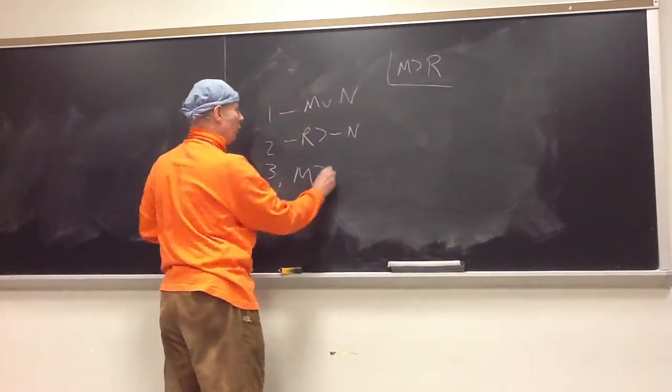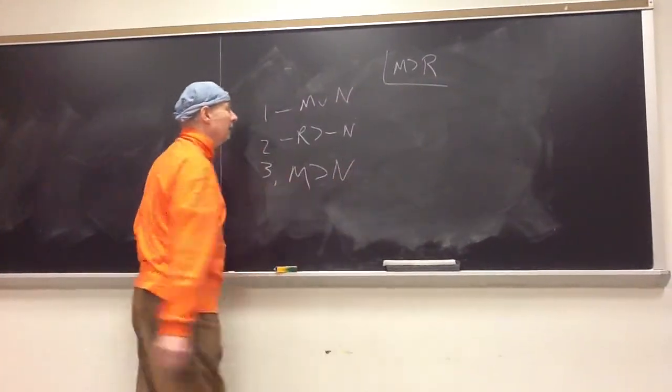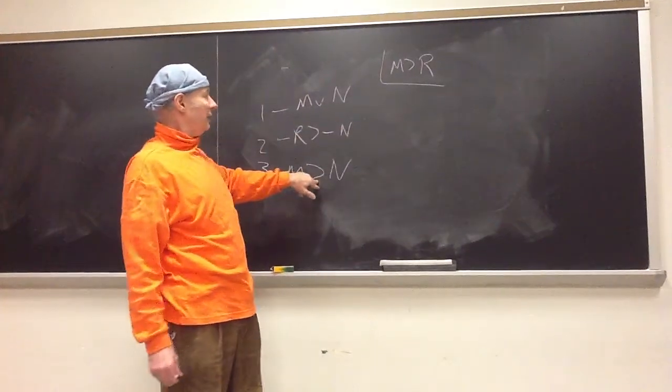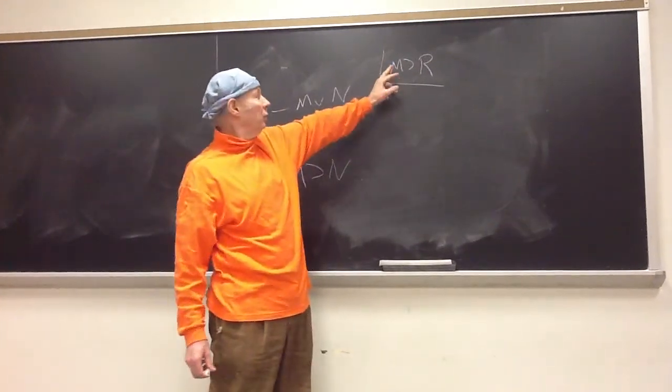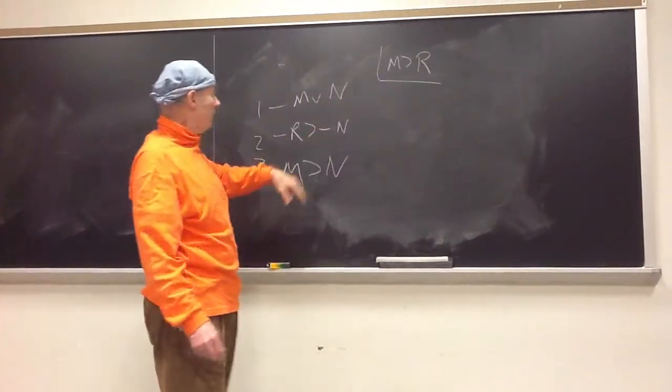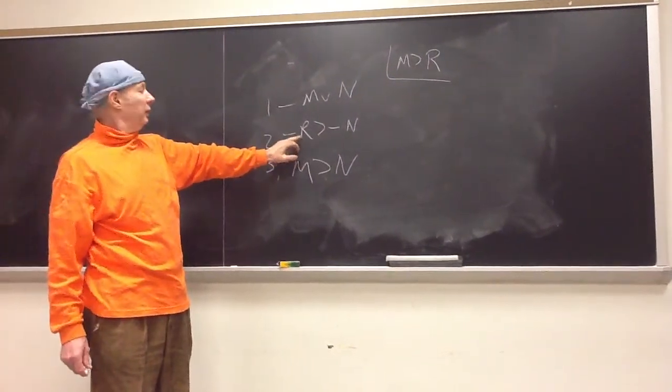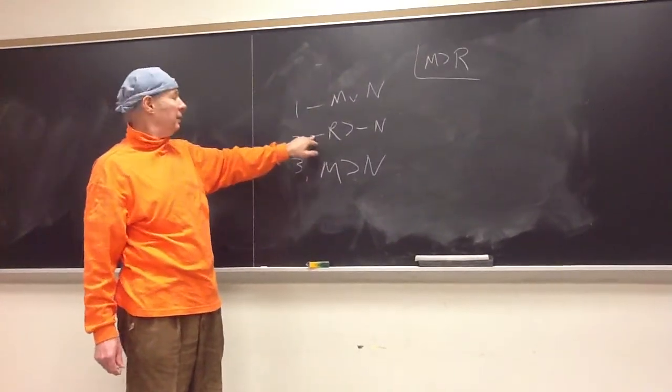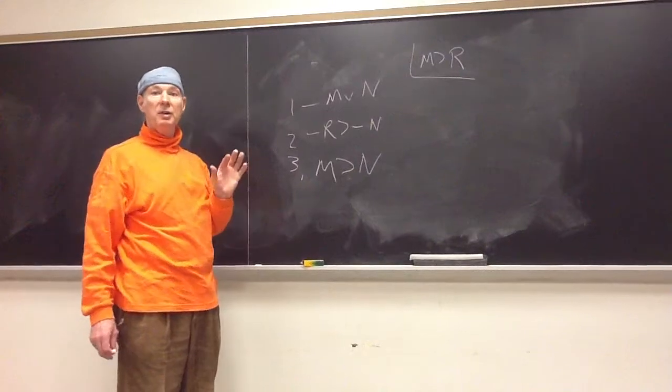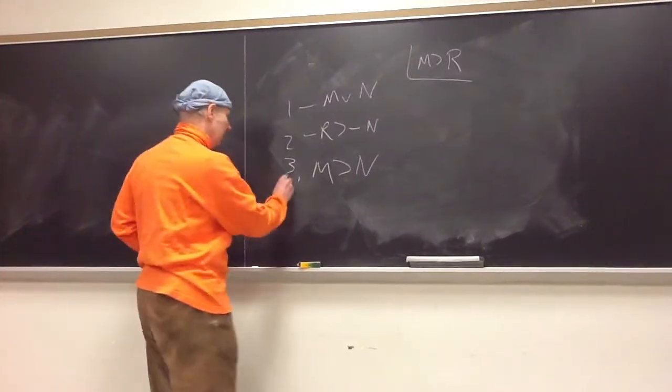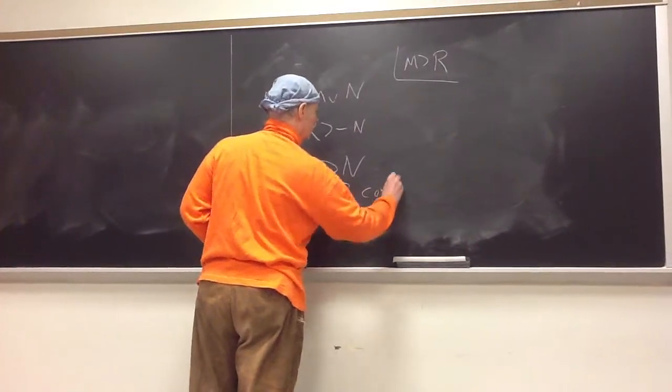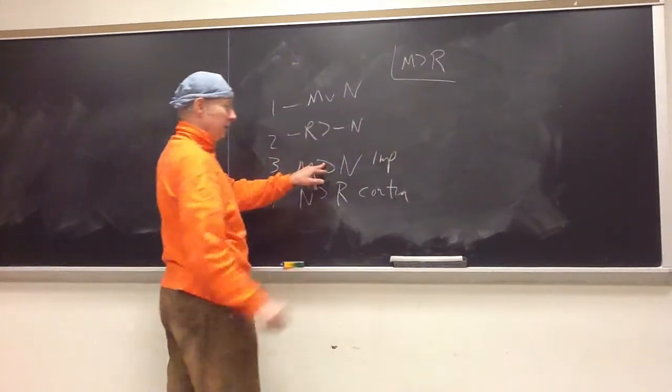So, I want now to use HS to get a horseshoe whose M is on the left and R is on the right. Well, I got to do something about this. The R is in the wrong place and it's negated. I want to unnegated and on the right. The way I do that is to contrapose. I forgot to IMP. Remember, always say what you're doing.